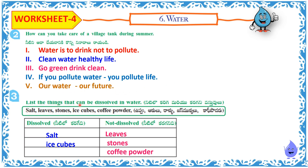List the things that can be dissolved in water. Objects dissolved in water: salt, ice cubes. Objects not dissolved in water: leaves, stones, coffee powder.